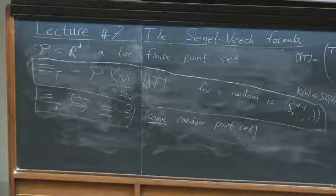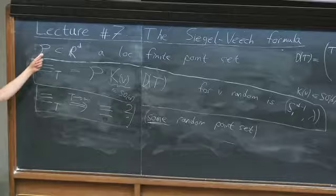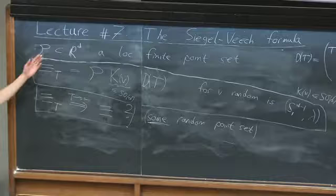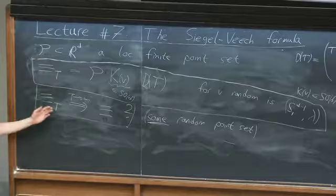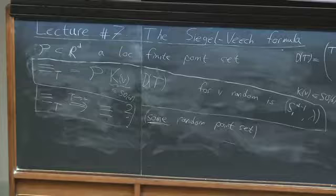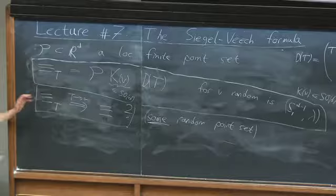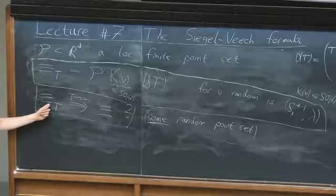It is a really interesting question whether there is a general theory: can you find more examples where you can prove such convergence? Even without identifying the limit, we can prove that this sequence is relatively compact in distribution—meaning that for any sequence of T-values tending to infinity, there exists a subsequence along which ψ_T converges in distribution to something.